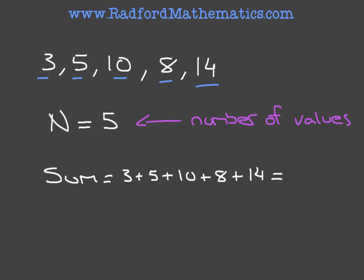we would have 3 plus 5, which is 8, plus 10, which is 18, plus 8, which would be 26, plus 14, which would lead us to 40.